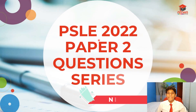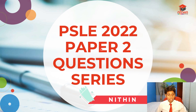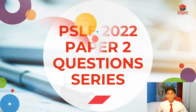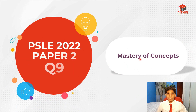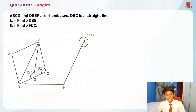Hello everyone, welcome to Nitin Academy. I'm Nitin and today in PSLily Math 2022 Paper 2 question series, I'll be going through question 9. So let's get started. Question 9 is actually testing us on angles and it has two parts: part A and part B.